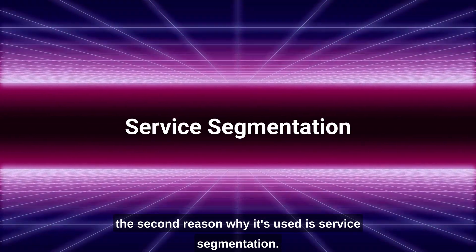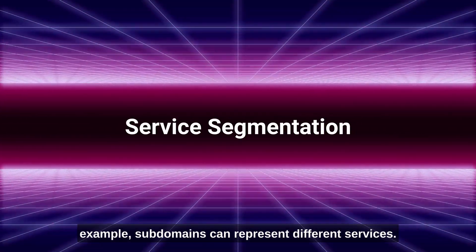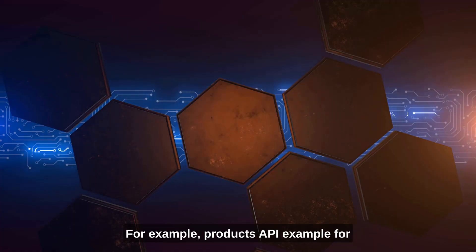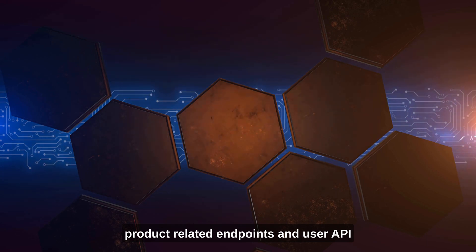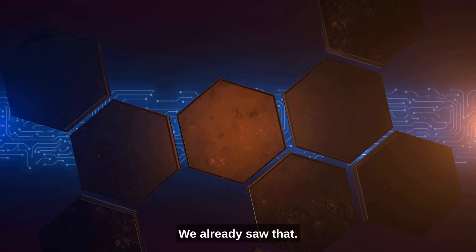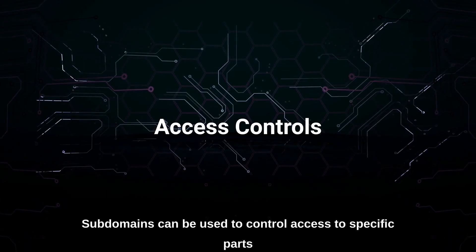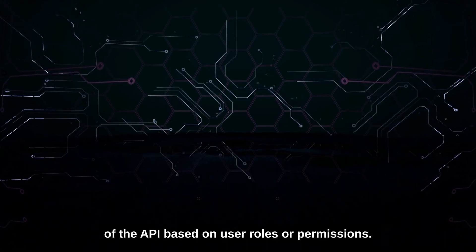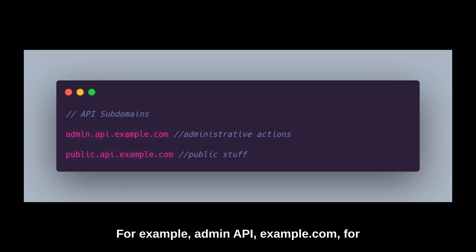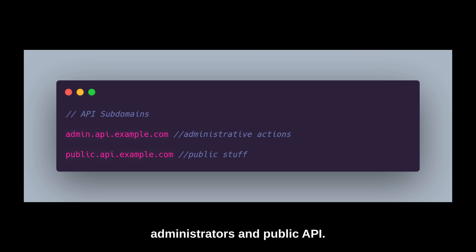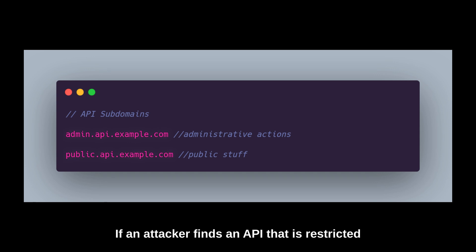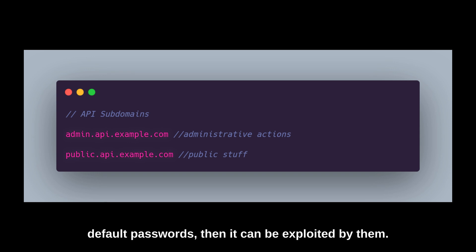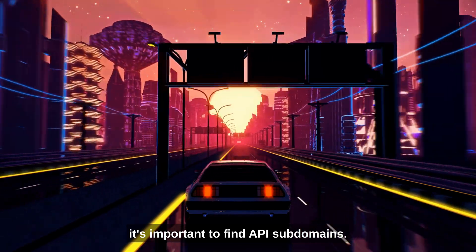The second reason why API subdomains are used is service segmentation. Subdomains can represent different services — for example, products.api.example.com for product-related endpoints and user.api.example.com for user-related endpoints. The third reason is access control. Subdomains can be used to control access to specific parts of the API based on user roles or permissions. For example, admin.api.example.com for administrative functions restricted to administrators, and public.api.example.com for publicly accessible endpoints. If an attacker finds an API restricted to admins but with poor access controls or default passwords, it can be exploited.